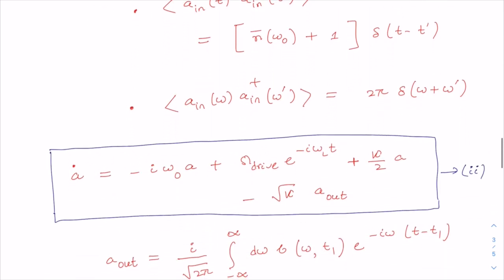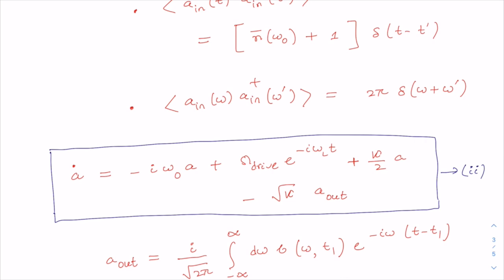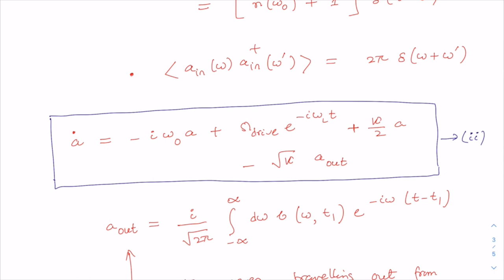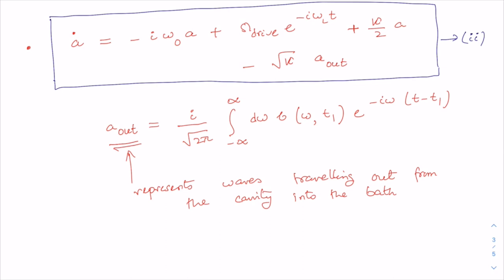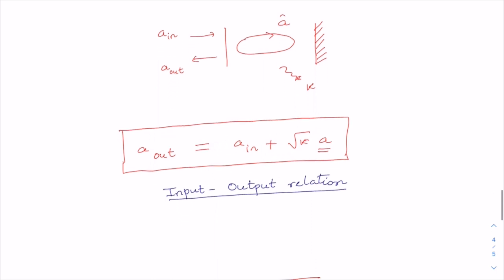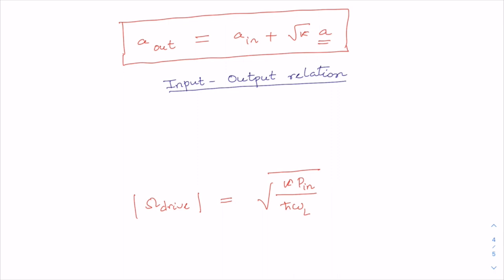We also got a solution for the bath mode going from a final time t1 to some instant t — moving in the backward direction — which resulted in the Heisenberg equation of motion for the optical mode where a_out represents waves traveling out from the cavity into the bath. Using these equations and formalism, we obtained the important input-output relation: the output field in terms of the input field and the cavity mode. We finally applied this input-output relation to work out the drive amplitude of the laser.